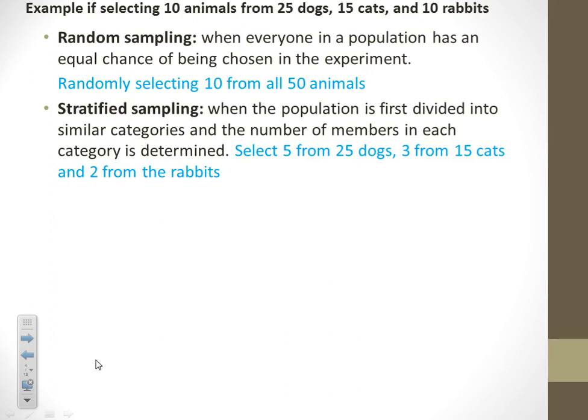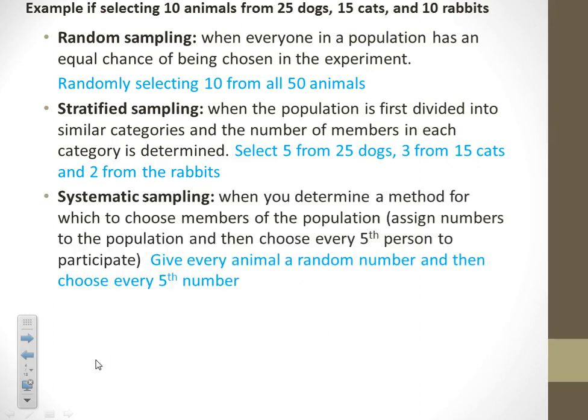Stratified, we would use that if we wanted to guarantee that we had dogs, cats, and rabbits represented in our sample. Systematic: we would number them all and we would pick every fifth animal.